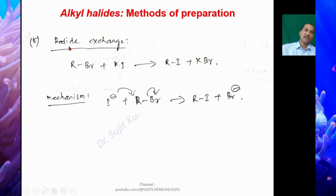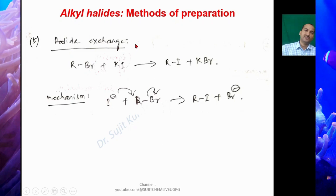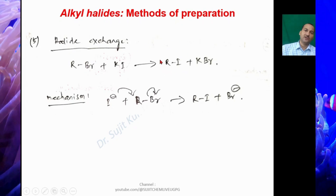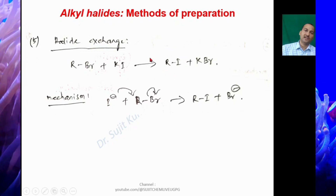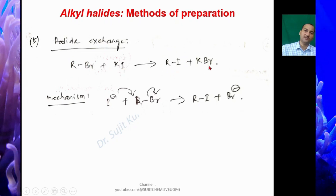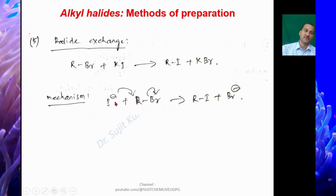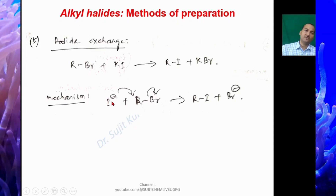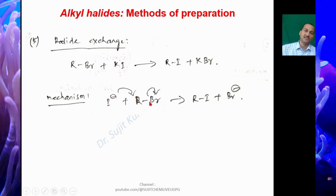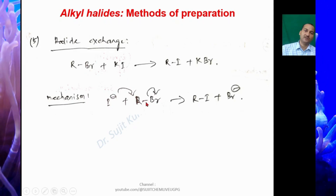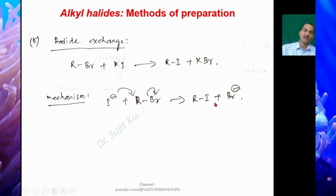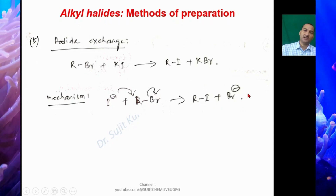Halide exchange reaction is another method for preparing alkyl halides: RBr + KI gives RI + KBr. I− is a good nucleophile; it attacks R and the R–Br bond breaks on Br, giving RI plus Br−.